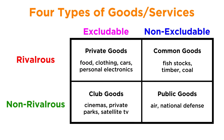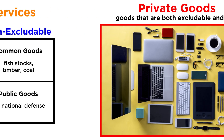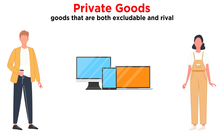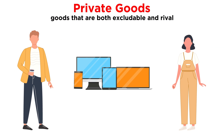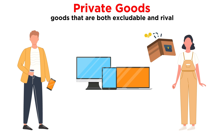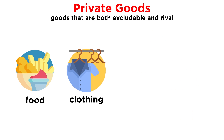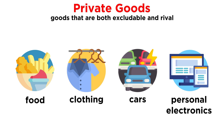Now let's combine these concepts. Private goods are those that are both excludable and rival — they have to be bought before they can be consumed. Therefore, anyone who can't afford them is excluded from consuming them, and once purchased, the ability of others to acquire the good becomes more limited. Examples include food, clothing, cars, and personal electronics.